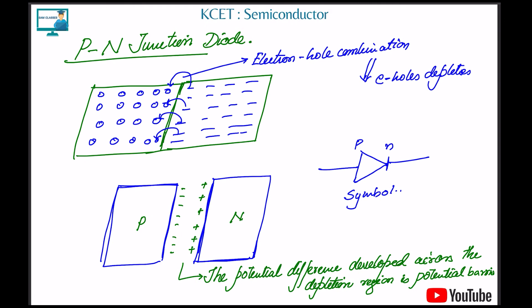What is a p-n junction? Take a p-type, take an n-type, and merge them — you get a p-n junction. Merging is done by heating at very high temperatures like 500–600°C in a furnace. When p and n are joined, electrons from n come and occupy the holes in p, creating a depletion region or depletion layer where electrons and holes deplete. This creates a charge separation, producing a potential difference and electric field. The potential difference across the depletion region is known as the potential barrier.